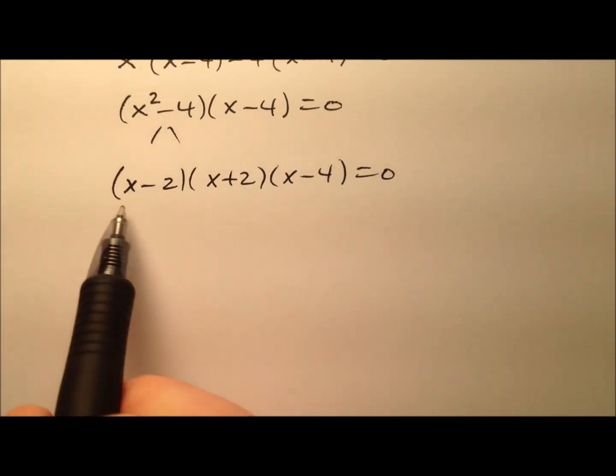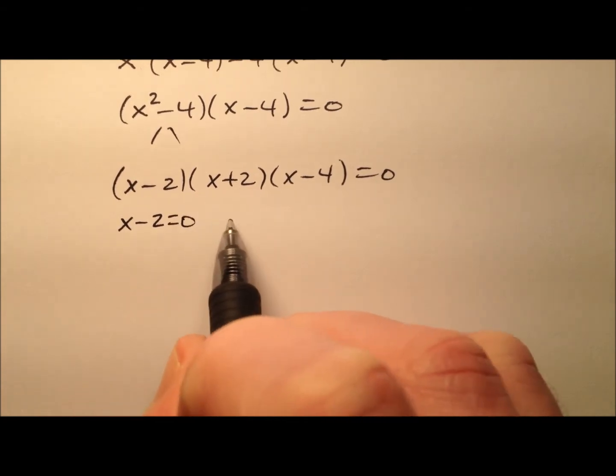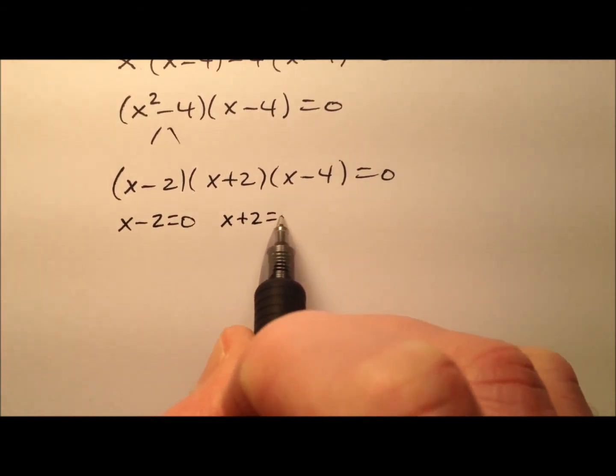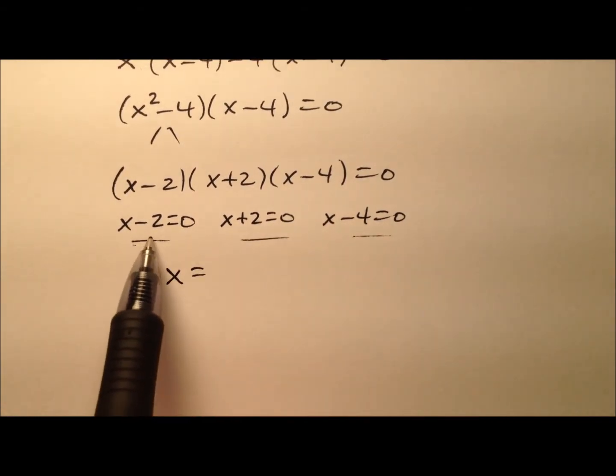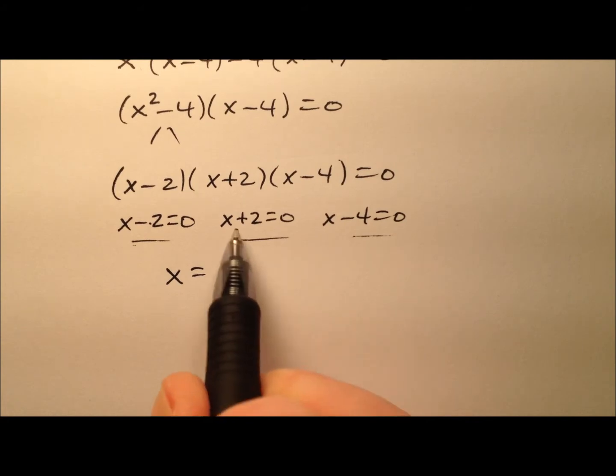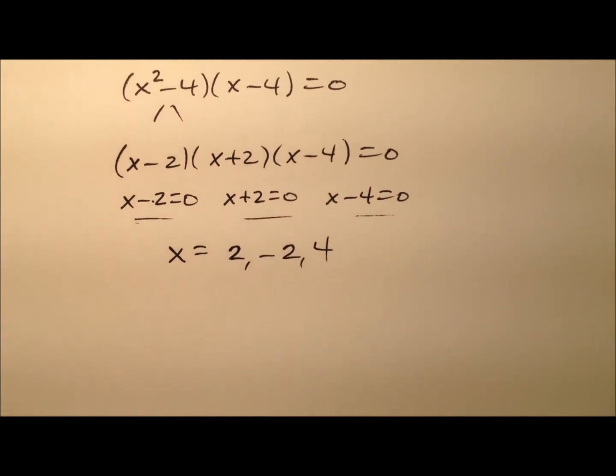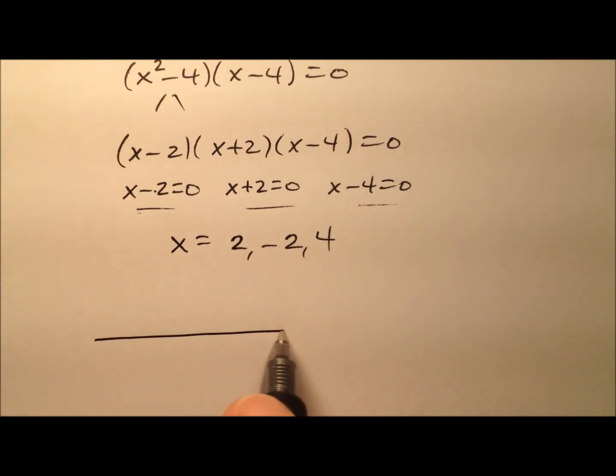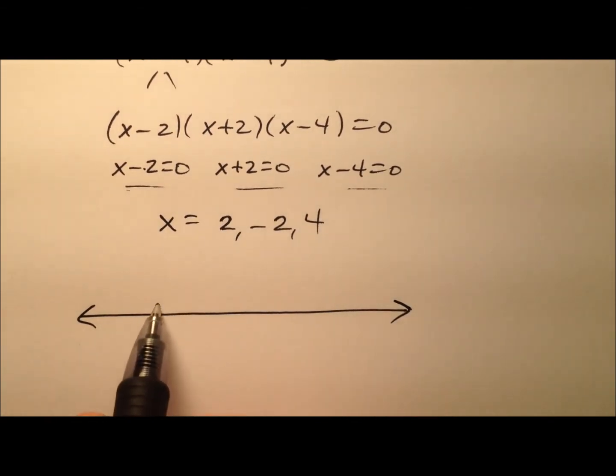So using our zero property of multiplication, I can go ahead and set each one of these factors equal to 0 and solve. And so I'll have 1, 2, 3 values of x, and those values will be positive 2, negative 2, and positive 4. So let's go ahead and draw those on a number line. We'll just kind of plot them. So negative 2 is this first one, and then we have positive 2, and we have 4.